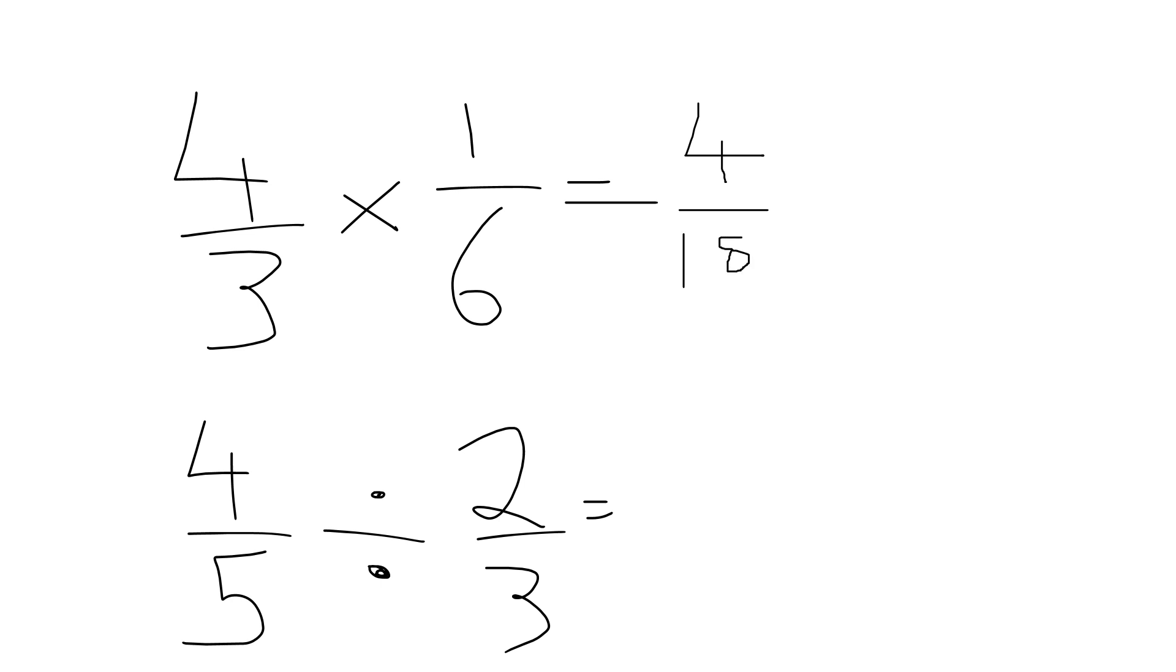They're both even, so I can divide top and bottom by two. Four divided by two is two, and then 18 divided by two is nine. So I get the answer two over nine or two ninths.